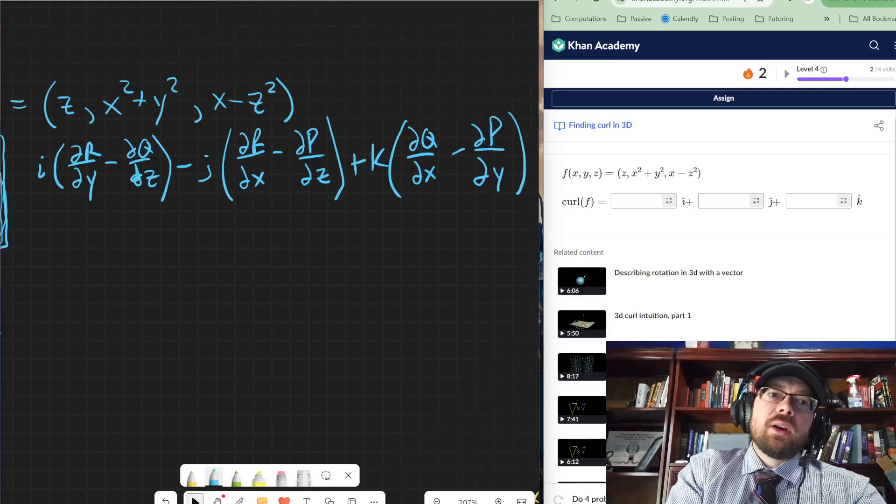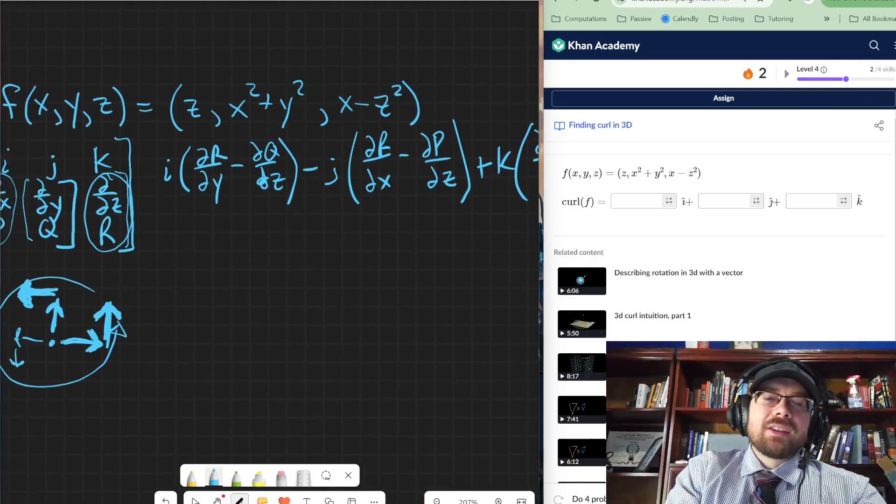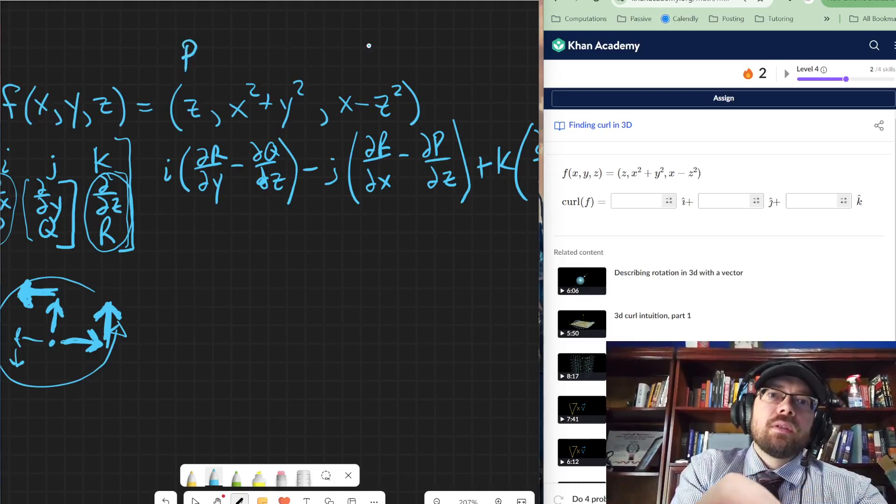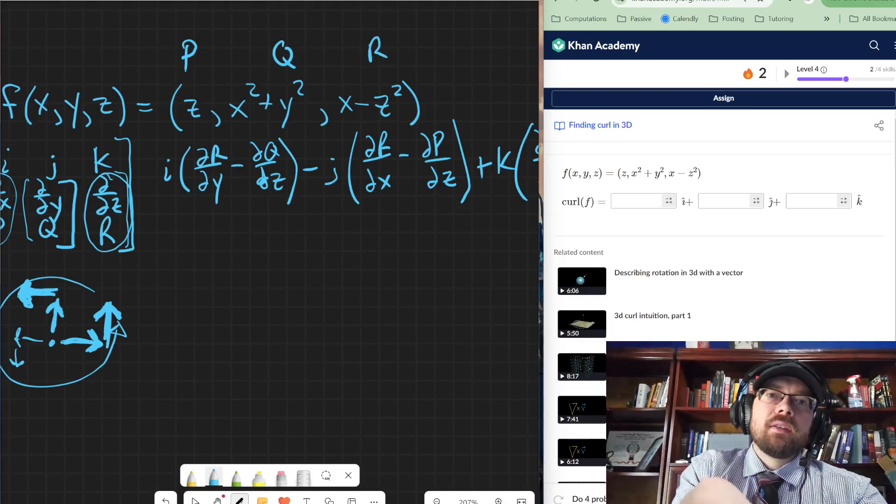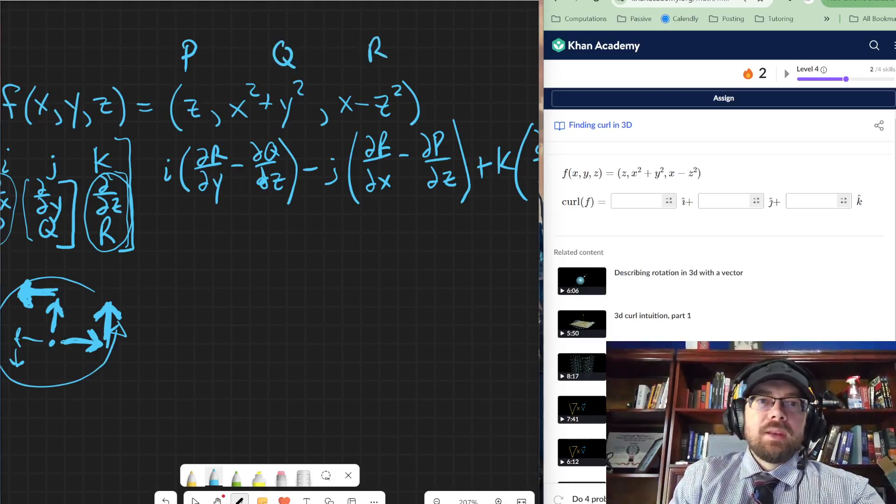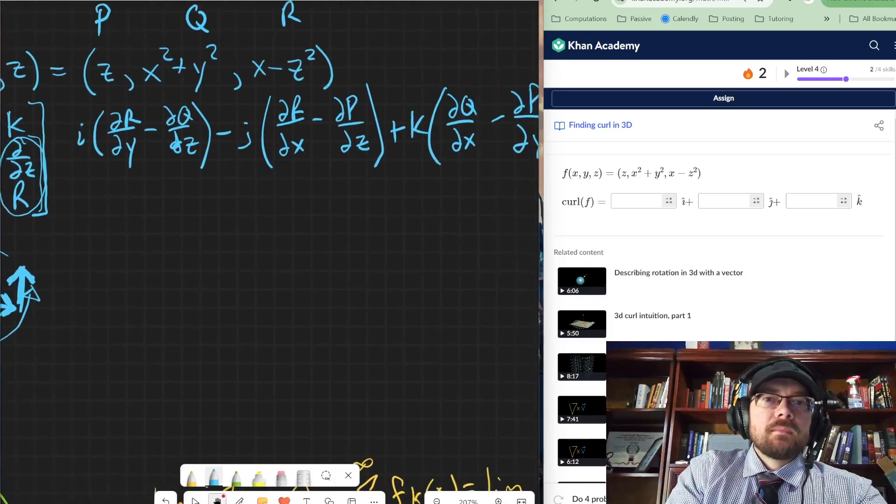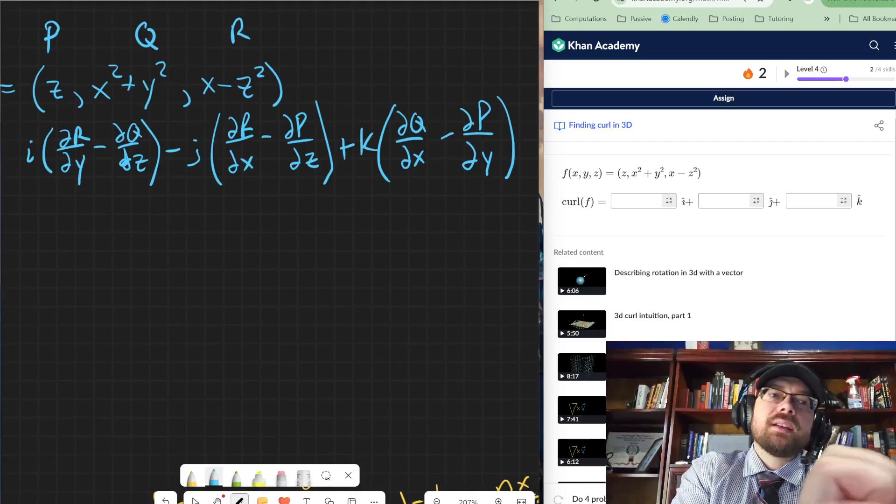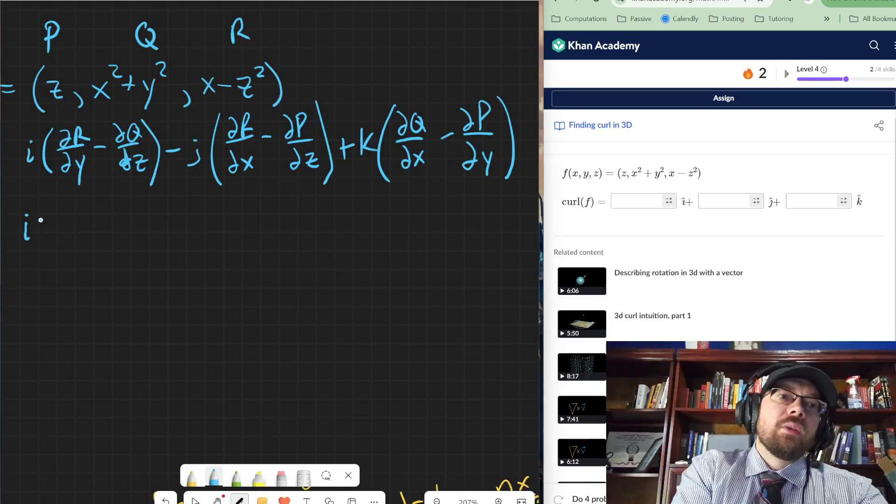And then we go ahead and do this here. So we have p, q, and r. It's being a little laggy here. p, q, and r. And for those p's, q's, and r's, we want to take the derivatives with respect to x, y, and z according to what we've got here.